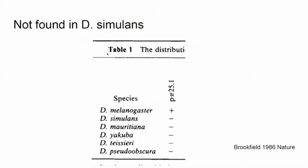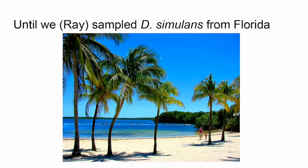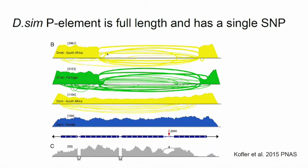The P element was never found in simulans — until Ray Tobler, a former student from here, made tremendous sacrifices for science by collecting flies from Florida. When we sequenced these, we realized: this is full of the P element. This is the coverage in a deviate plot. Reads mapping to the P element from melanogaster are the top two panels — lots of reads and lots of internal deletions. But mapping from Drosophila simulans from South Africa and Florida, we see more uniform coverage: the P element is everywhere in these populations.